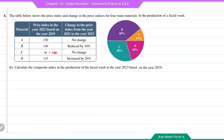Question B: calculate the composite index in the production of the facial wash in the year 2023 based on the year 2019. For this, we first need the index number in the year 2023 based on 2019 for each material A, B, C, D.